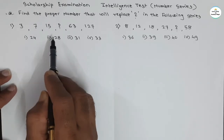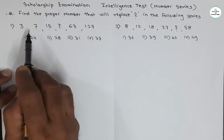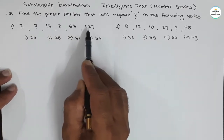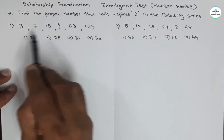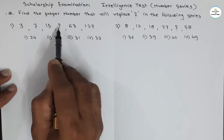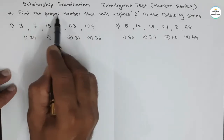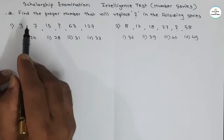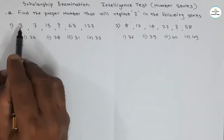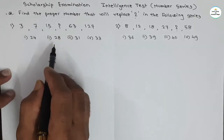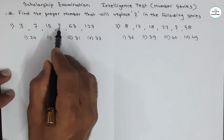Let's start our first question. The first series is 3, 7, 15, question mark, 63, 127. In the series, there is a question mark and we have to replace that question mark with a proper number. The question is: find the proper number that will replace the question mark in the following series. Series means the numbers have some relations to each other — we have to find that relation and find the missing number.